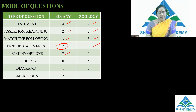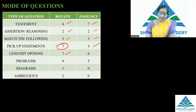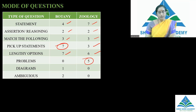Lengthy options questions — where the question is small but the options are very lengthy — 7 in botany and 6 in zoology. Coming to problems, none appeared in botany, but 5 problems appeared in the zoology part.